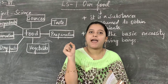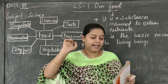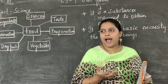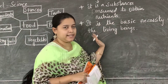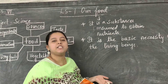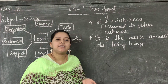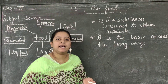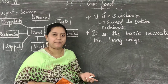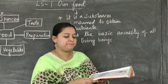As I said, we get food from plants and animals. Plants give us vegetables and fruits, and animals give us eggs, milk, meat, etc. Now coming to Table Number Three, children.